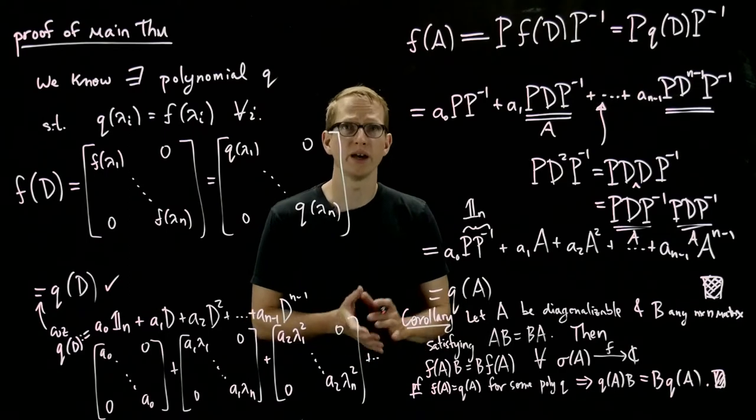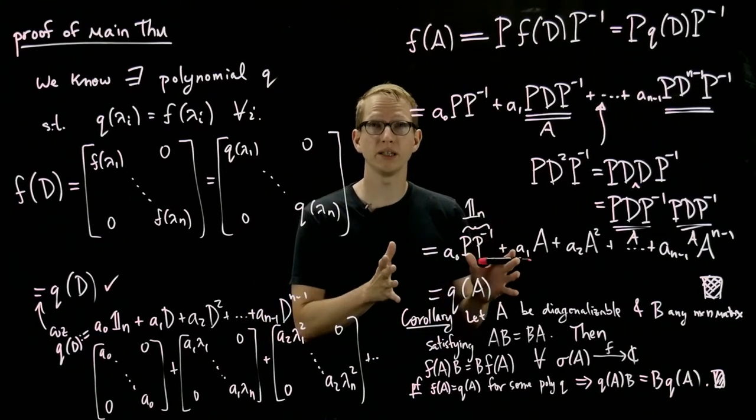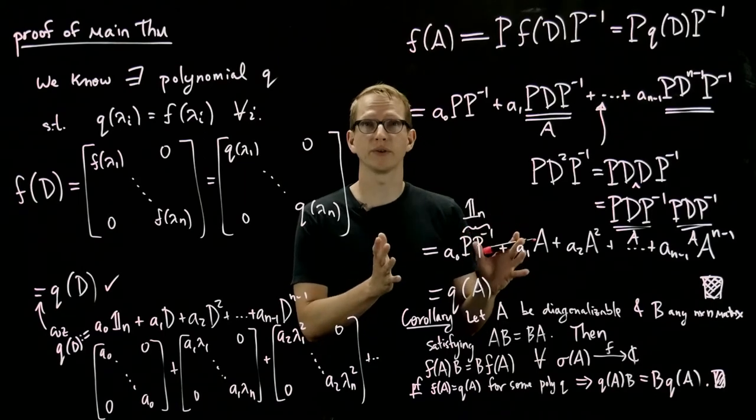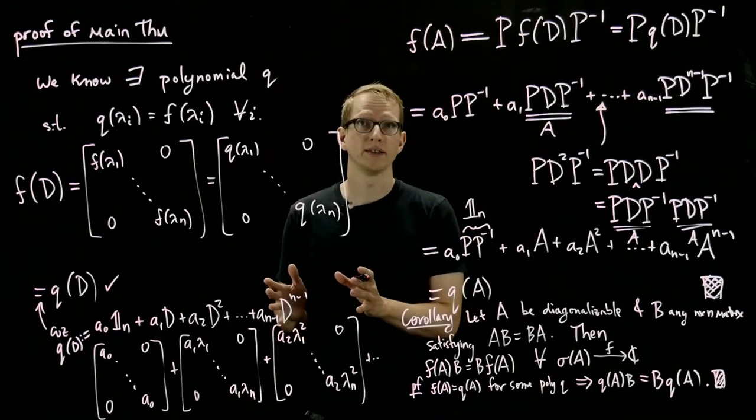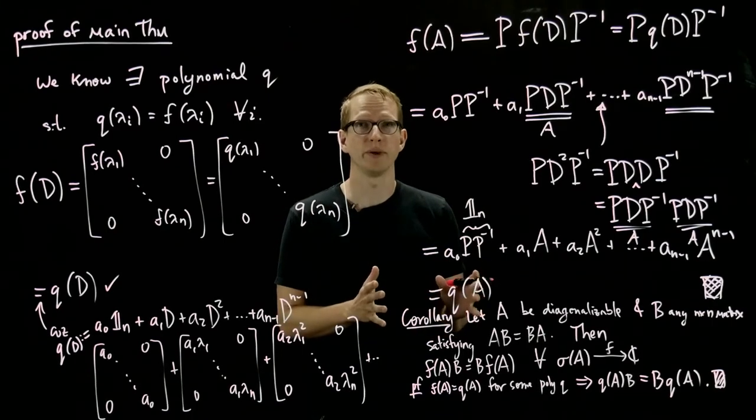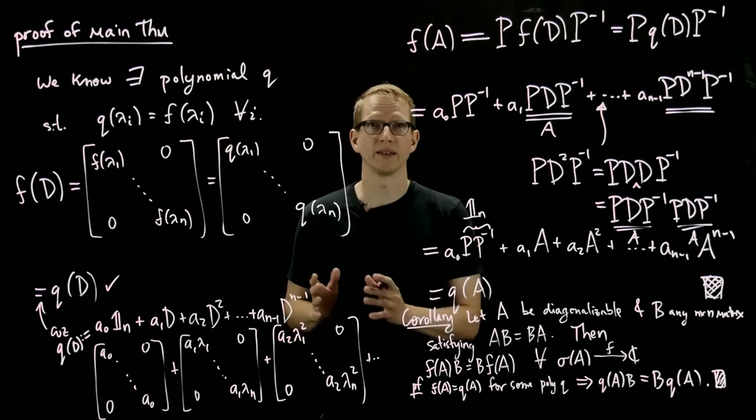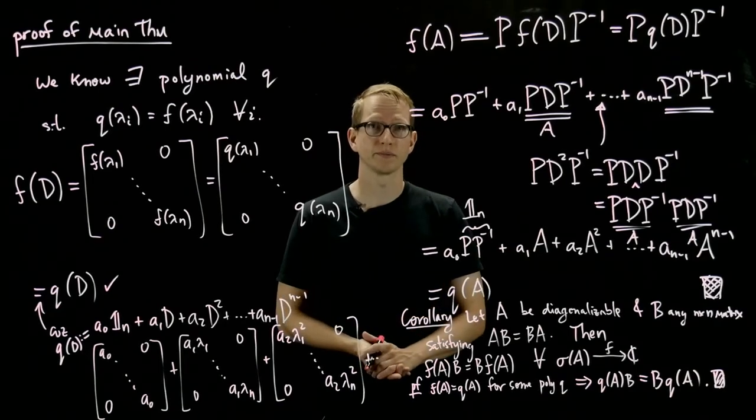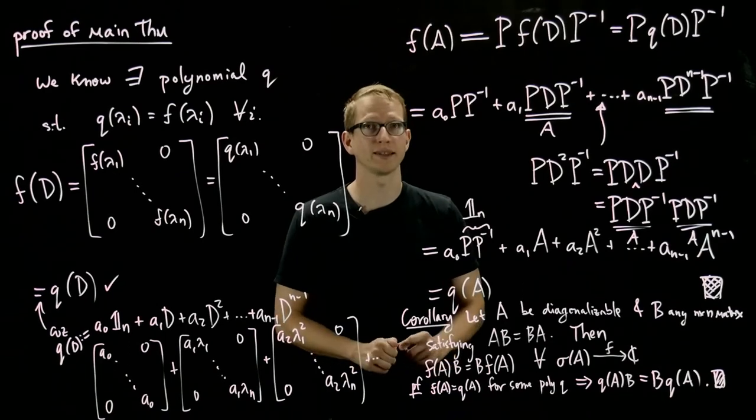which could be completely wild, such as the logarithm or something like that, then there's a polynomial that gives us the same value for that matrix if we apply the polynomial to the matrix versus if we apply the function to that matrix.